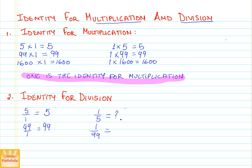It will be in decimal, which you will again learn later. I am not covering that here at the moment. So, 1 is not the identity for division. That was our discussion on the identity for multiplication and division.